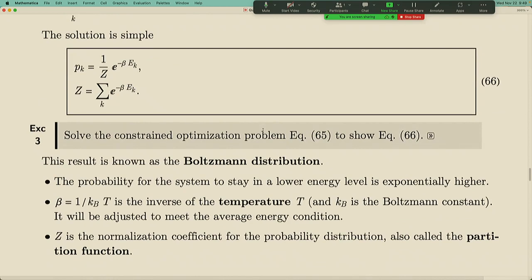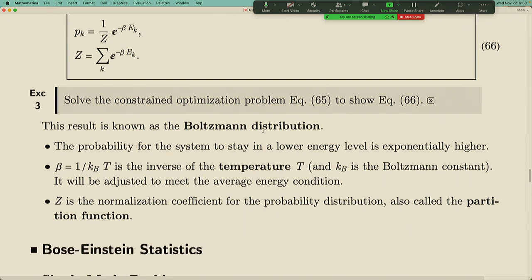Beta is called the inverse temperature, and Z is the normalization factor. The take-home message is that if a quantum state has low energy, this exponential is large and the probability for that state is high. The probability is exponentially suppressed for higher energy states — the system always wants to be in many-body states of relatively low energy, and the probability to find the system in higher energy states is exponentially rare with increasing energy. This is the Boltzmann distribution and canonical ensemble, and that is what I want to talk about today.